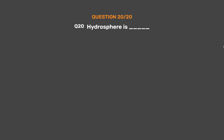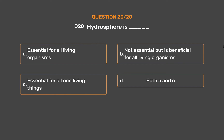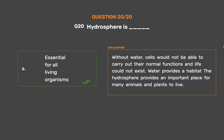Question No. 20. The hydrosphere is? Option A: Essential for all living organisms. Option B: Not essential but beneficial for all living organisms. Option C: Essential for all non-living things. Option D: Both A and C. The correct answer is Option A: Essential for all living organisms. Without water, cells would not be able to carry out their normal functions and life could not exist. Water provides a habitat — the hydrosphere provides an important place for many animals and plants to live.